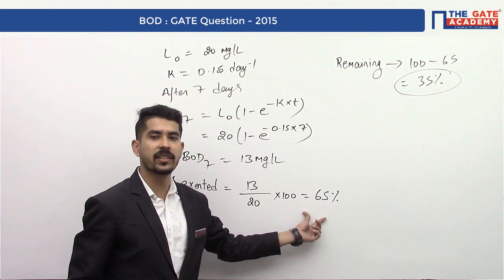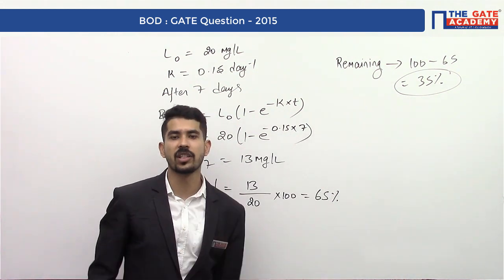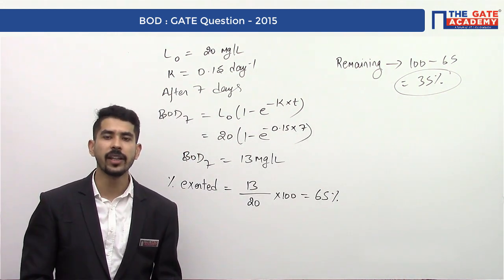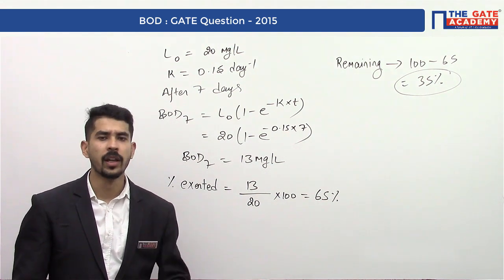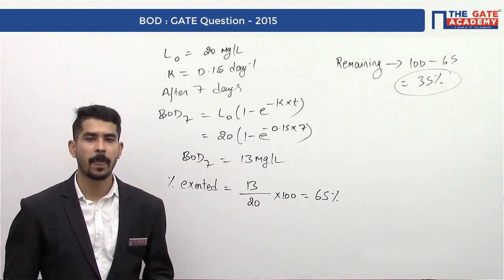So the percentage exerted is 65 percent and the percentage remaining after seven days is 35 percent. So it was a simple question from GATE 2015. Thank you.